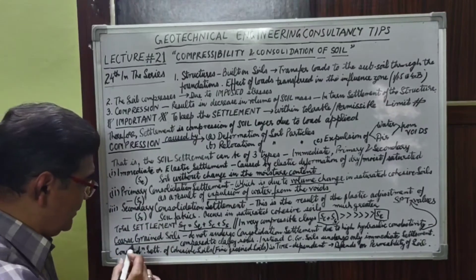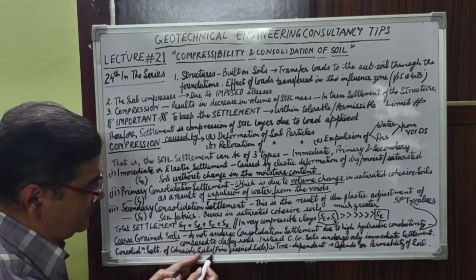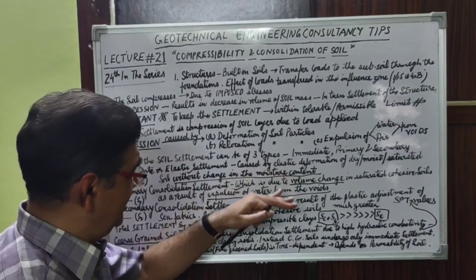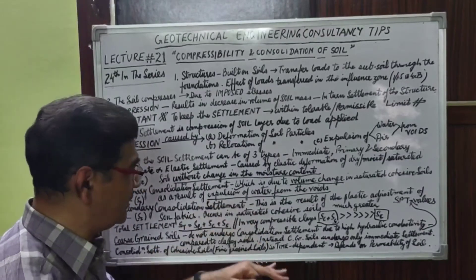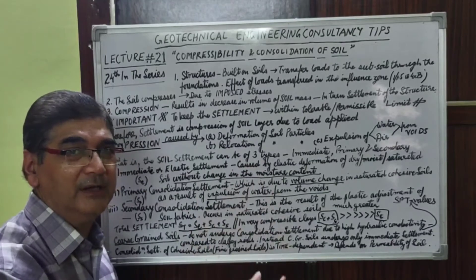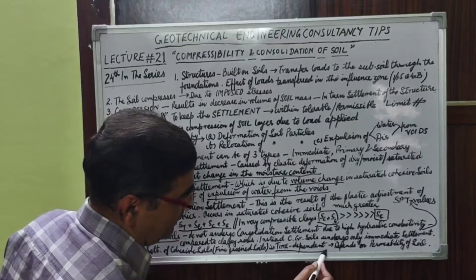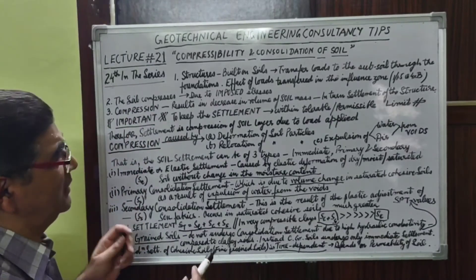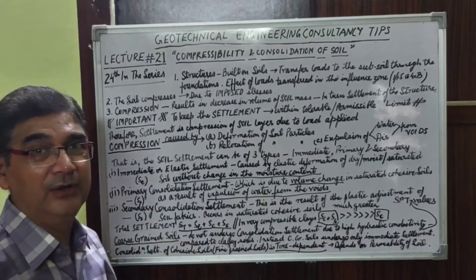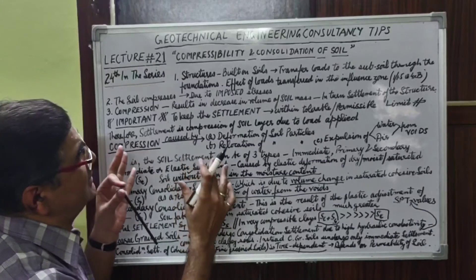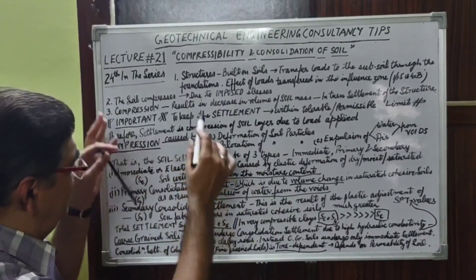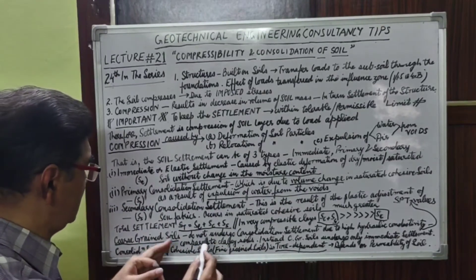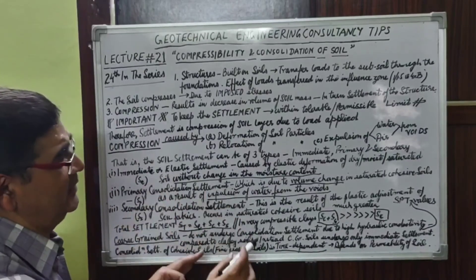The consolidation settlement of cohesive soils, that is fine-grained soils, is time dependent. After the immediate settlement and the primary consolidation settlement have occurred, secondary consolidation settlement may take many years to complete. This time dependency also depends on the permeability of that particular cohesive soil. This lecture on compressibility and consolidation of soil covers immediate or elastic settlement, primary consolidation settlement, secondary consolidation settlement, for coarse-grained or cohesive soils respectively, wherever these settlements are applicable.